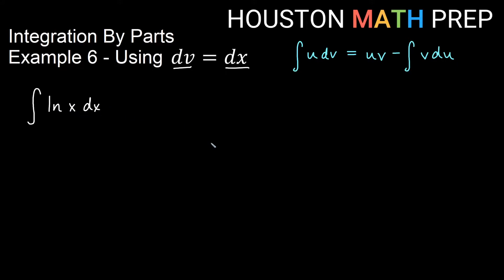But if we choose it to be u in our integration by parts process, then we won't actually be taking the antiderivative of it, right? We'll be taking the derivative of it because when we select u, then we find du, the derivative of that.